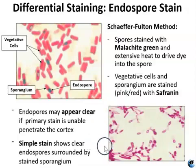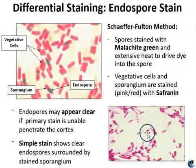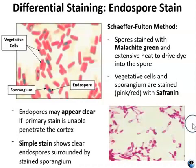Sometimes you can also see endospores when doing a simple stain — the endospores will appear as clear voids within the cell because the dye is not able to penetrate the endospore.